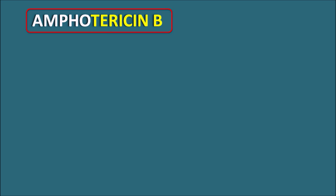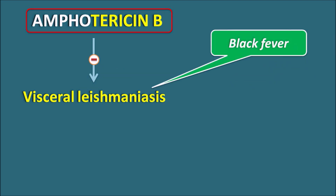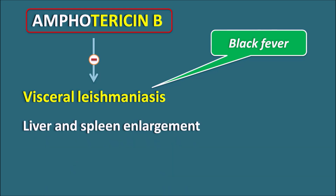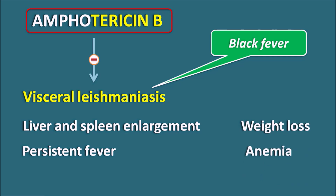Apart from fungal infections, this drug is also useful in the treatment of visceral leishmaniasis, also called black fever. Symptoms mainly include enlargement of the liver and spleen, persistent fever, weight loss, and anemia. In visceral leishmaniasis, Amphotericin B can be used. That is why this drug has a broad spectrum of activity.